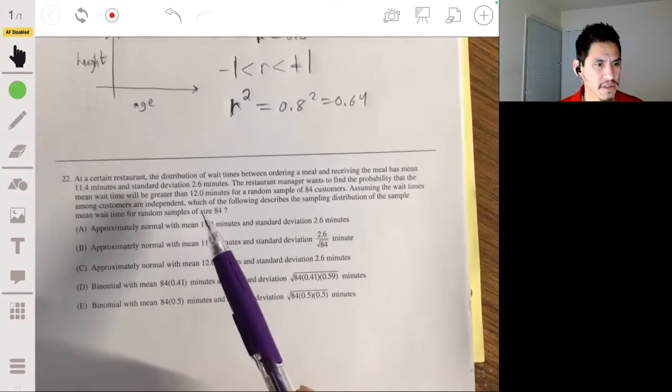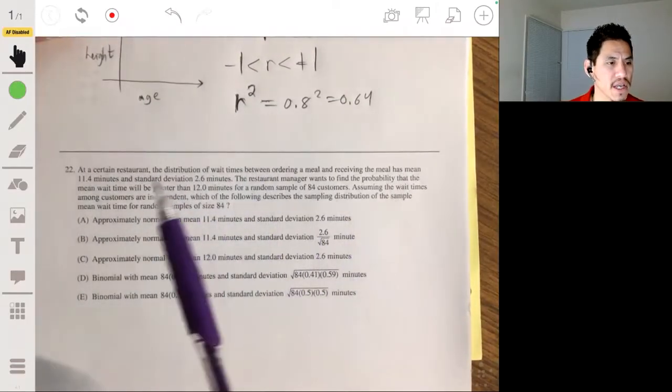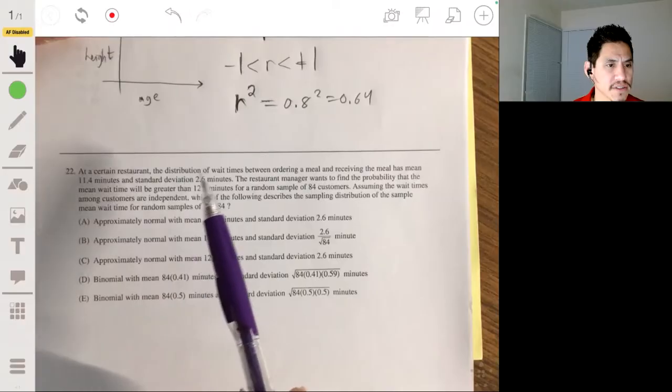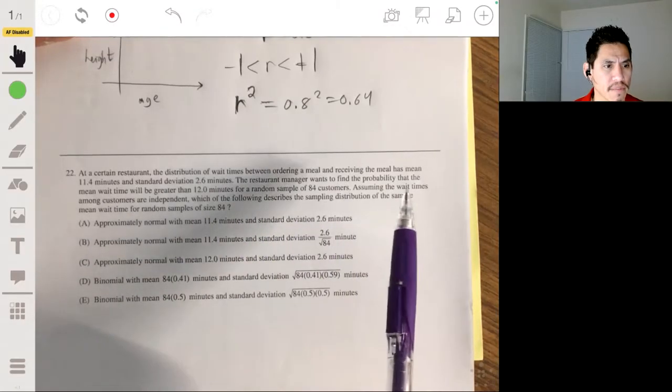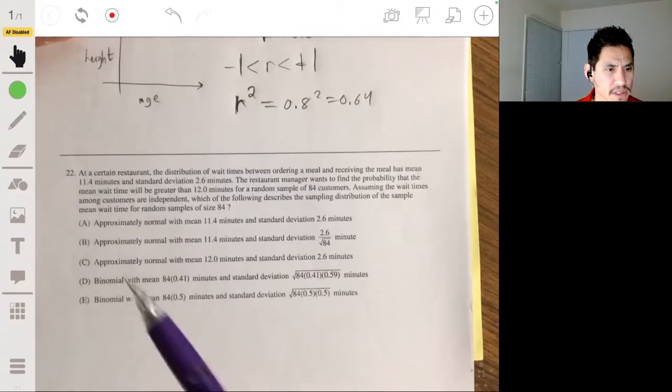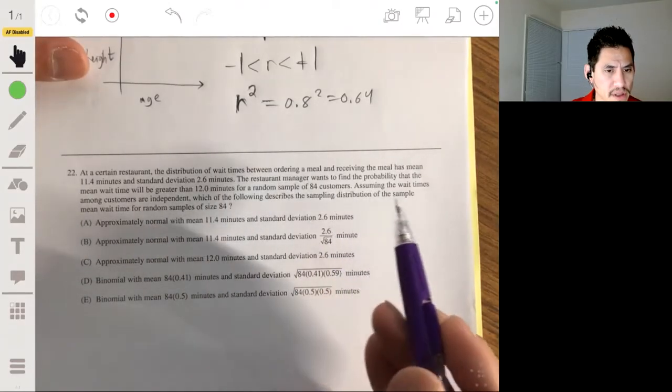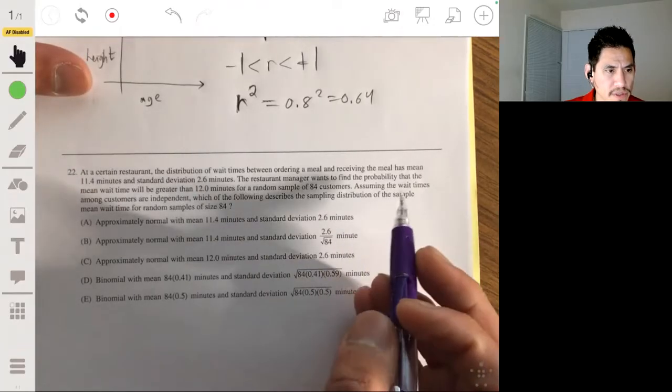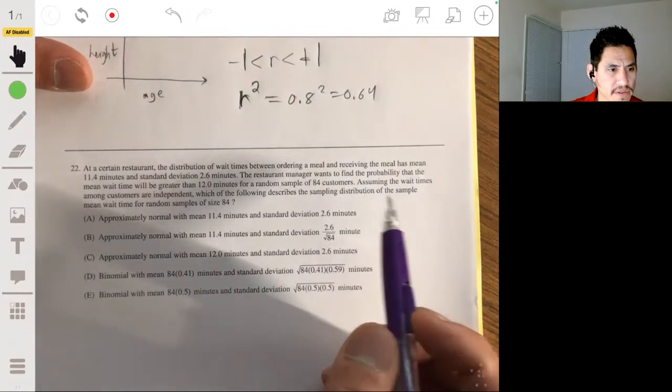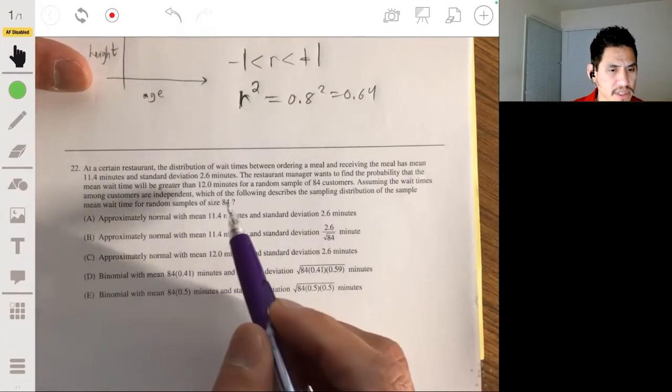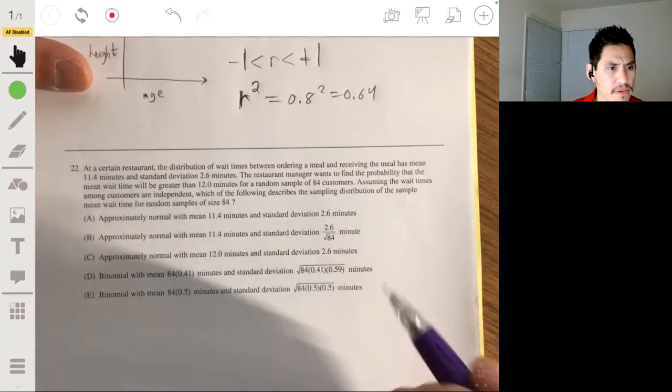22, in a certain restaurant distribution of wait times between ordering a meal and receiving the meal has mean 11.4 minutes and standard deviation 2.6 minutes. The restaurant manager wants to find the probability that the mean wait time will be greater than 12 minutes for a random sample of 84 customers. So assuming the wait times among customers are independent, which of the following describes the sampling distribution of the sample mean wait time for random samples of size 84.